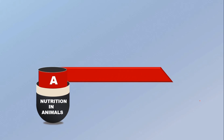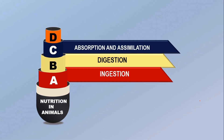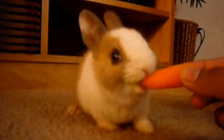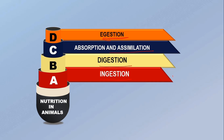In this chapter, Nutrition and Animals, we will learn about how animals take in food, i.e. ingestion; how they digest it into simpler forms, i.e. digestion; how nutrients are absorbed and used in the body, i.e. absorption and assimilation; and how waste is removed, i.e. egestion. So, animal nutrition is a process of taking food by an organism and its digestion, absorption and utilization in the body. There are 5 main steps: ingestion, digestion, absorption, assimilation and egestion.